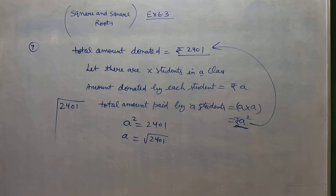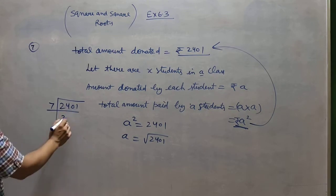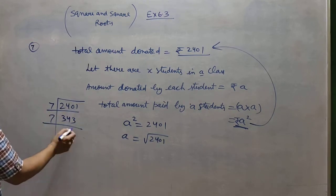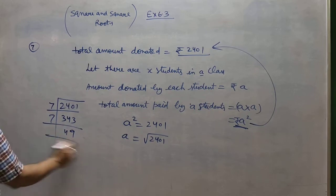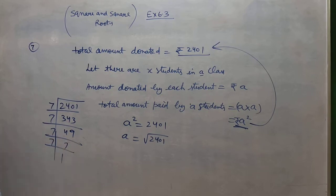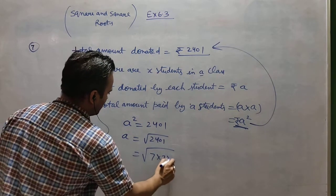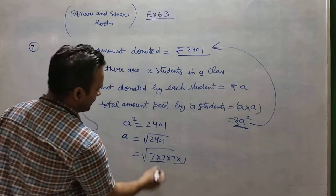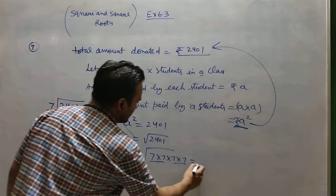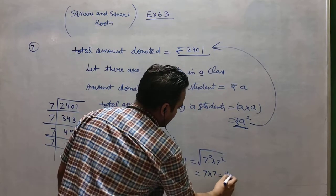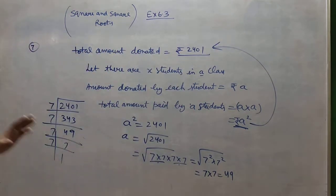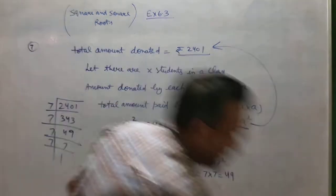Using prime factorization, dividing by 7: we get 7×7×7×7. This is in square form, so we take the root part only: 7×7 = 49. It means there were 49 students in the class and each student donated ₹49.